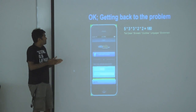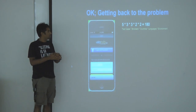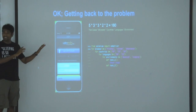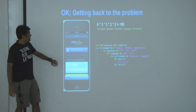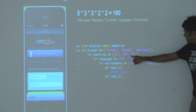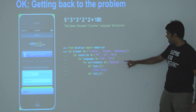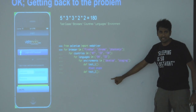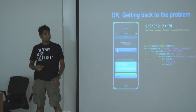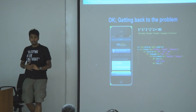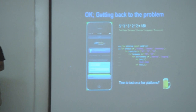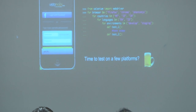We get back to the problem: 180 test cases taking a lot of time to test manually. Now I put the same thing in a Python script. I have all three browsers, all my countries — international, Indonesia, India — languages, environments, and my test cases. I run this once and within these loops each of the 180 test cases gets executed. Instead of manually pushing buttons and doing monkey testing, I can spend time doing something more productive.